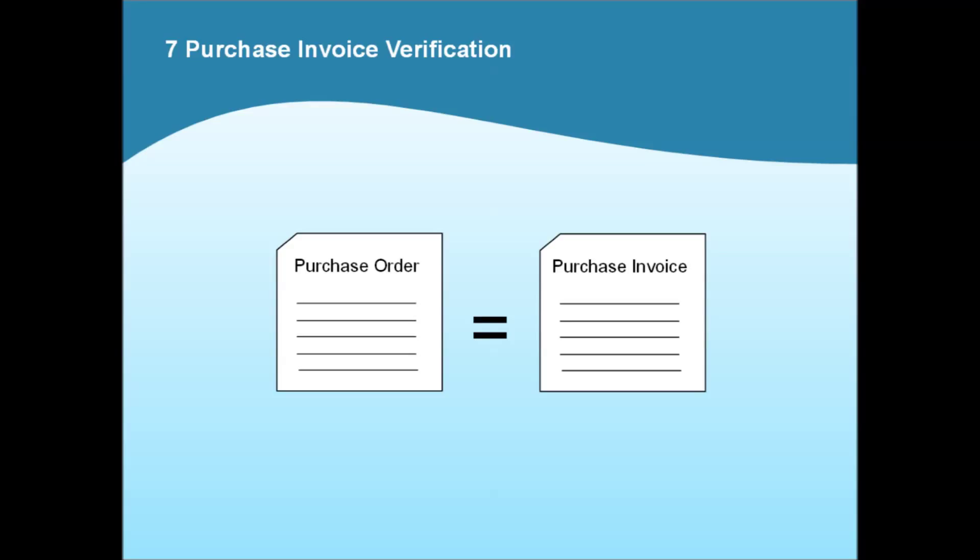It's also common for a supplier with inferior systems to send you an invoice for items that never turned up, or perhaps the wrong model. You will be able to take this up with them quickly and clearly when you present the original purchase order that was sent.